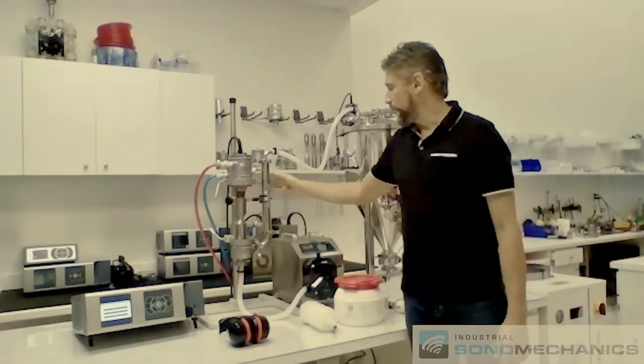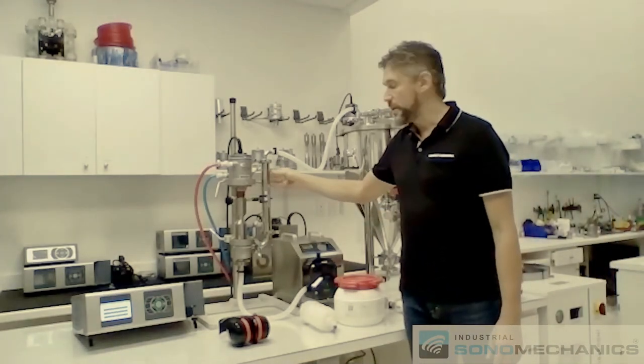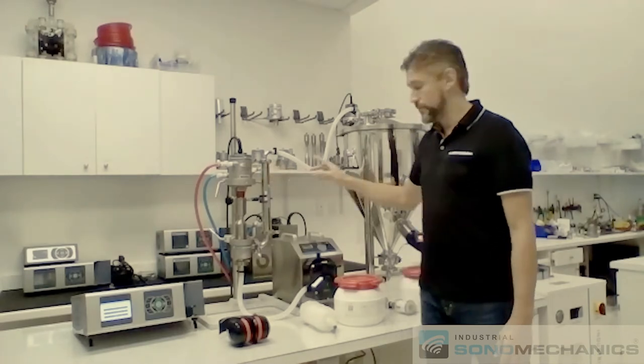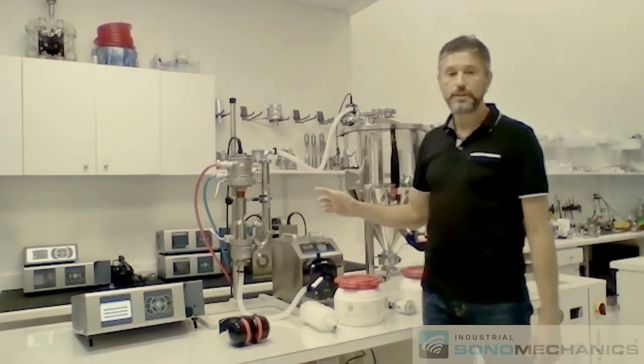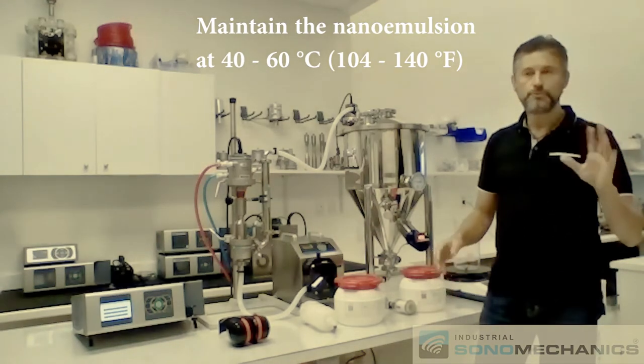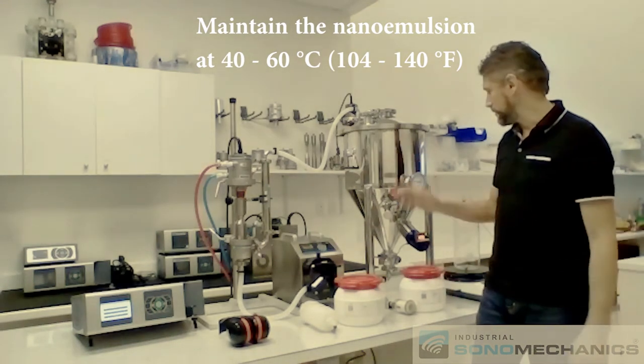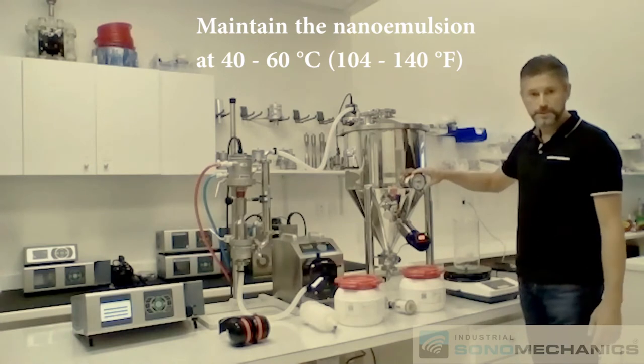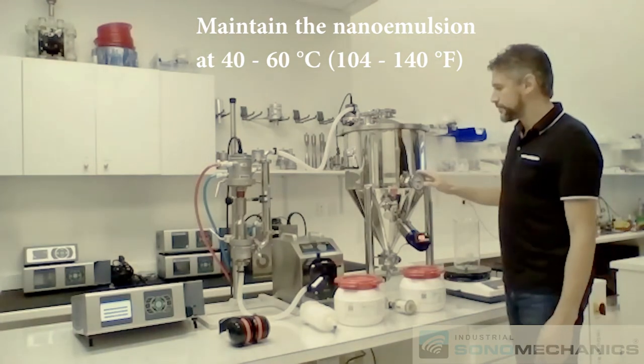It's also important to point out that this heat exchanger is there to maintain the temperature of the liquid that you're processing at the right level. We recommend approximately 50 degrees. It could be anywhere between 40 and 60 degrees throughout processing. And there is a thermometer that you can use at the tank that will tell you what the temperature is.